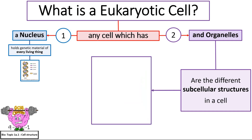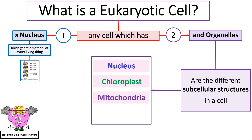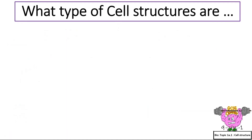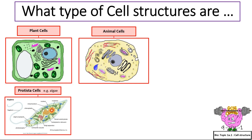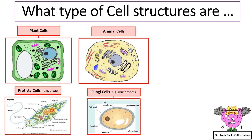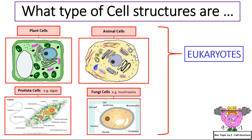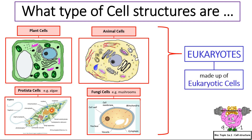Name four different subcellular structures of a eukaryotic cell: the nucleus, chloroplast, mitochondria, ribosomes. What type of cell structures are plant, animal, protista and fungi cells? They're all eukaryotes, made up of eukaryotic cells.